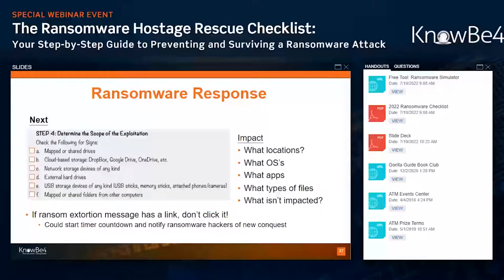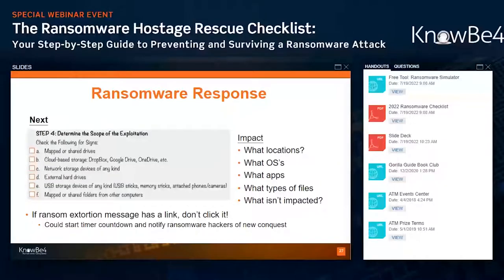Step four is to determine the scope of the exploitation — having everybody go around and find out who got hit, what locations, what operating systems, what applications, what types of files. Most ransomware programs don't encrypt everything on the disk; they encrypt a subset of just the data files because it's faster. You want to know: did they only hit Windows machines? Did they only hit Linux machines? Did they hit Apple machines? Did they hit your cloud drives and network-attached storage? What types of files are impacted and what wasn't? This is really a big deal because you're trying to find out the extent of the damage and the scope of the exploitation — and this is going to drive the rest of your steps.